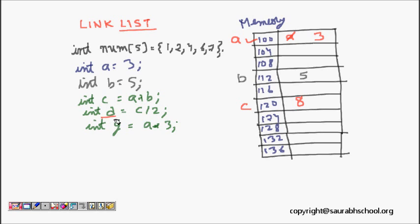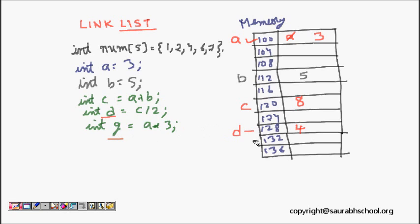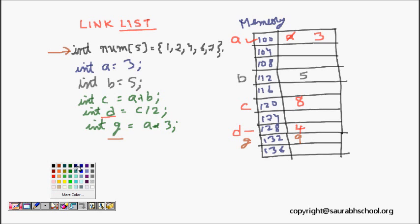The computer allocates memory for d = c/2 = 4, and g = a*3 = 9. Everything looks fine. But now we need to allocate memory for the array of five integers. The computer checks and counts: it has 10 memory locations and 5 have been used, so 5 remain.